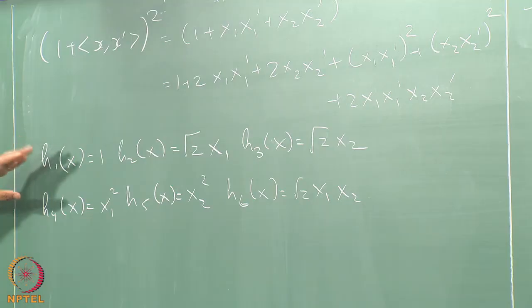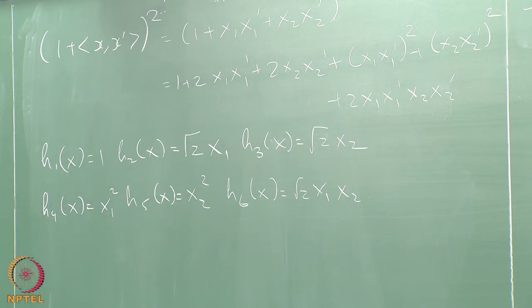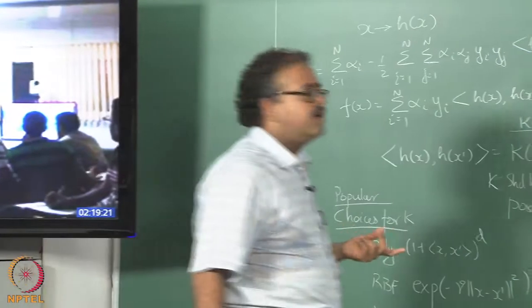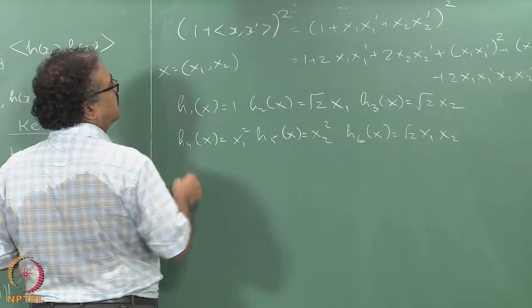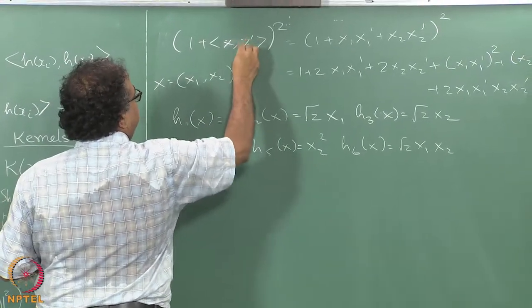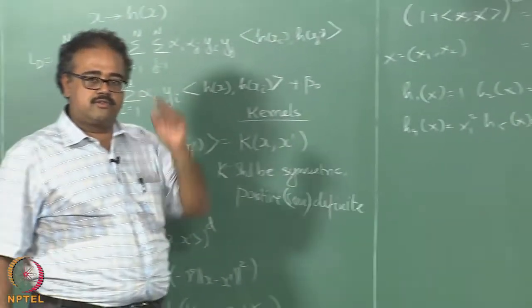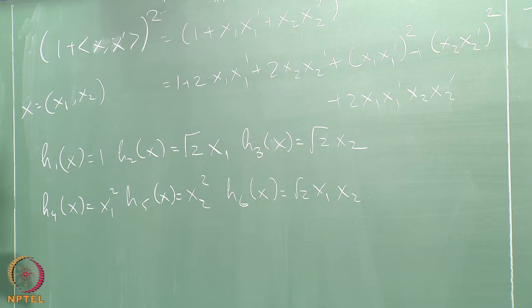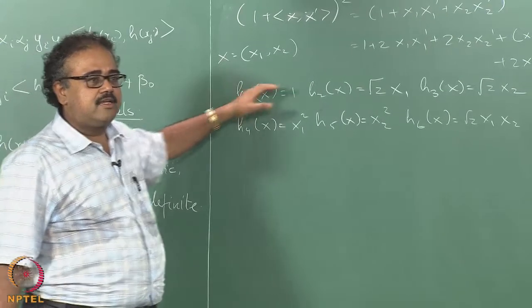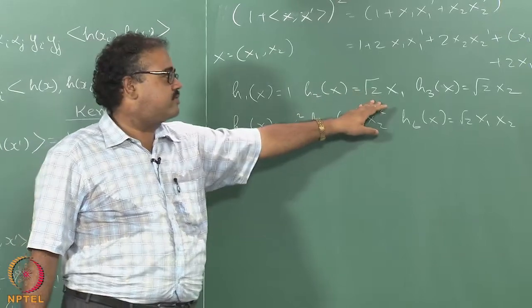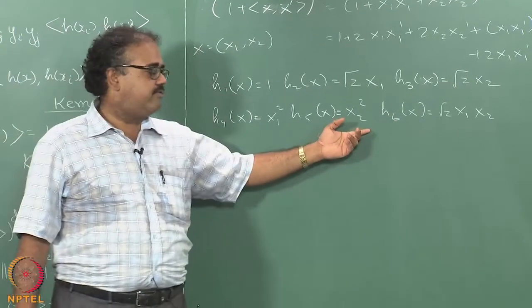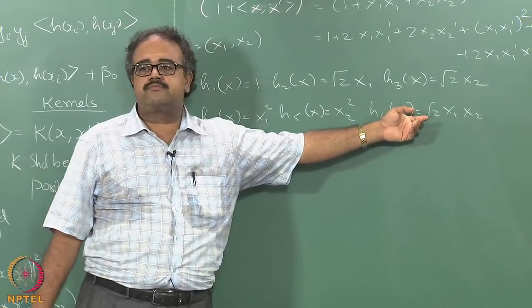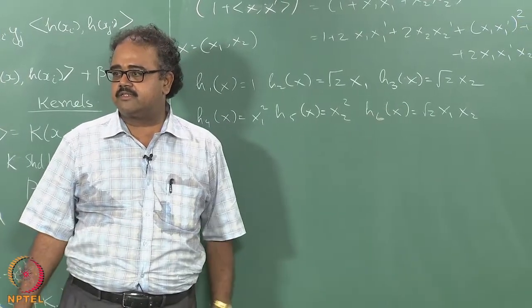What is this function H? It is essentially the quadratic basis expansion. I have 2 features x1 and x2. So x is the vector (x1, x2) consisting of 2 coordinates. This is the quadratic expansion: the first coordinate is 1, the second is x1, the third is x2, the fourth is x1 squared, the fifth is x2 squared, and the sixth coordinate is x1 times x2 — it has done the full quadratic basis expansion.